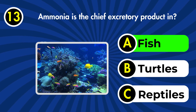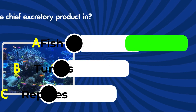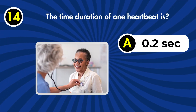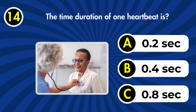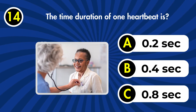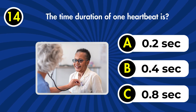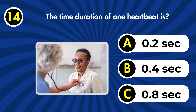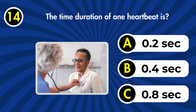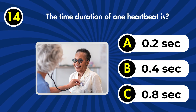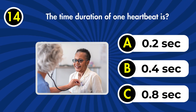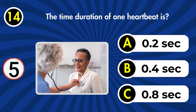Next question: ammonia is the chief excretory product in: a) fish, b) turtles, c) reptiles. Correct answer: a) fish. Next question: the time duration of one heartbeat is?